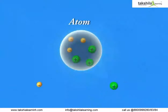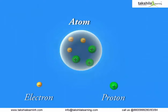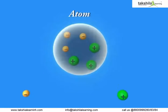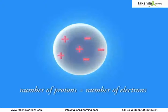So, it seemed likely that an atom was composed of protons and electrons, both in equal numbers for mutually balancing their charges.